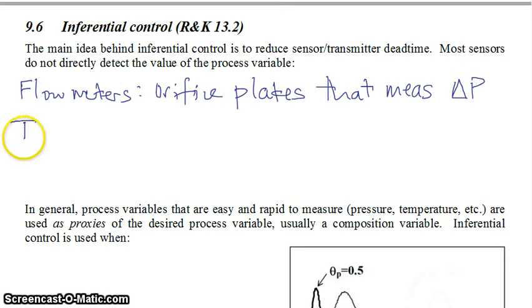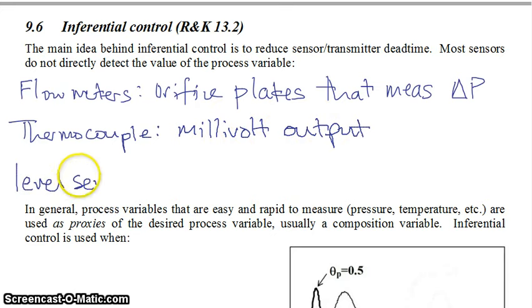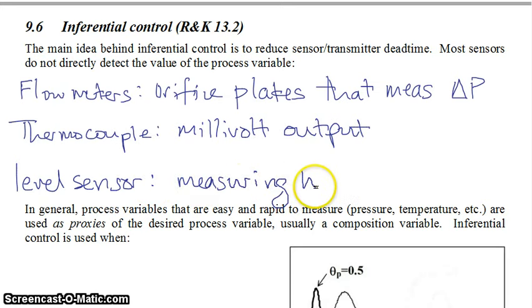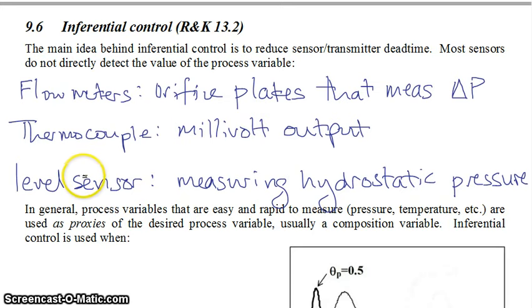Or you might have a thermocouple. A thermocouple is not actually really measuring the temperature — it's measuring some millivolt output. Or a level sensor is often measuring hydrostatic pressure. And there needs to be a good model which converts what the sensor is actually measuring into the thing that you want it to measure. Another example is a thermometer, which measures the height of a mercury column or an ethanol column, and that has to be really well correlated to temperature so you can read the temperature off the thermometer.